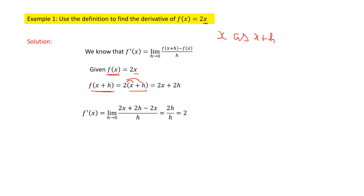I will get f'(x) equal to (2x + 2h − 2x) divided by h. By cancelling +2x and −2x, we get 2h divided by h. Then, by cancelling h and h, I get the derivative of the given function is 2.